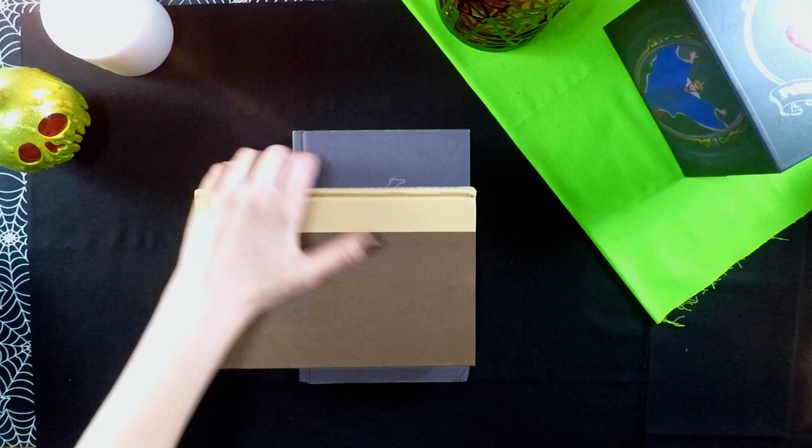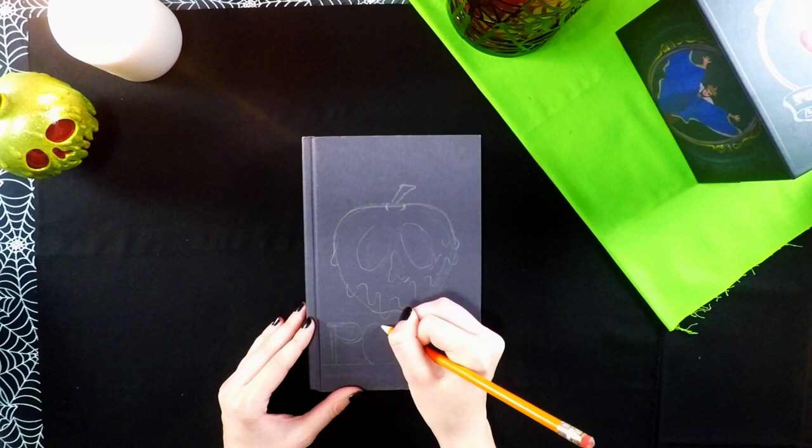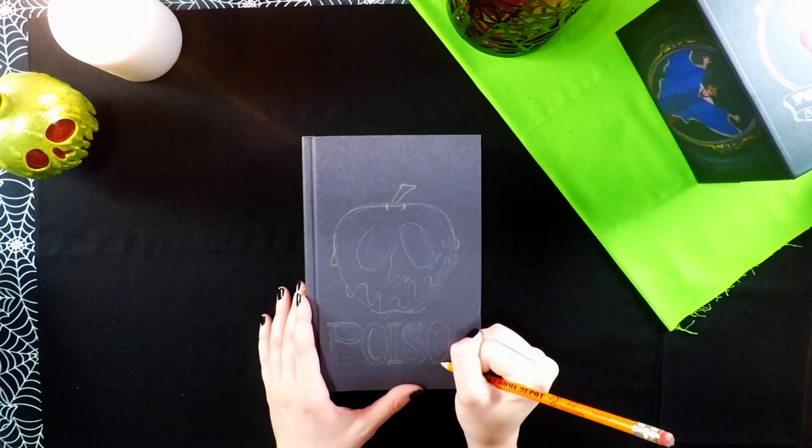Next I'm drawing just a straight line across the book so I can begin to write the word poison underneath the apple.